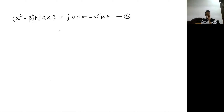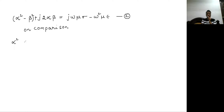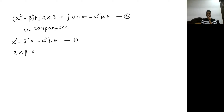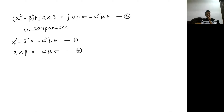Comparing real and imaginary terms on both sides: the real part gives alpha squared minus beta squared equals minus omega squared mu epsilon — call this equation number three. The imaginary part gives 2 alpha beta equals omega mu sigma — call this equation number four.